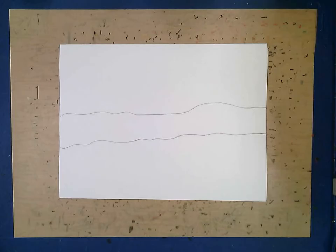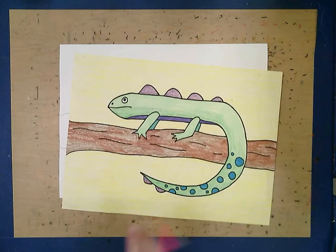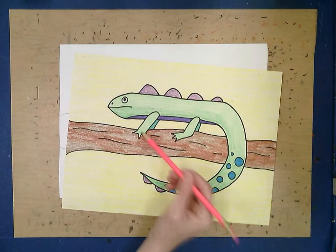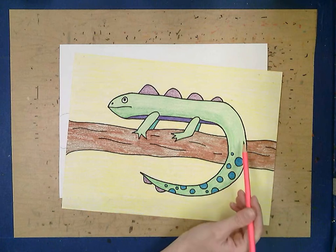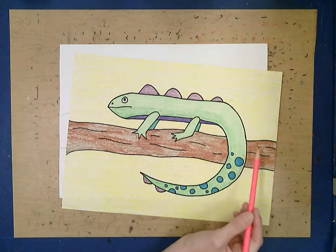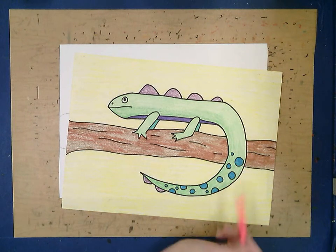Now you'll notice I drew that really really light, it might even be a little hard to see. I drew it really light because I know I'm going to be erasing part of it later. If you take a look at my finished picture, the iguana's feet and tail both come in front of my branch, so part of my branch is going to get erased.